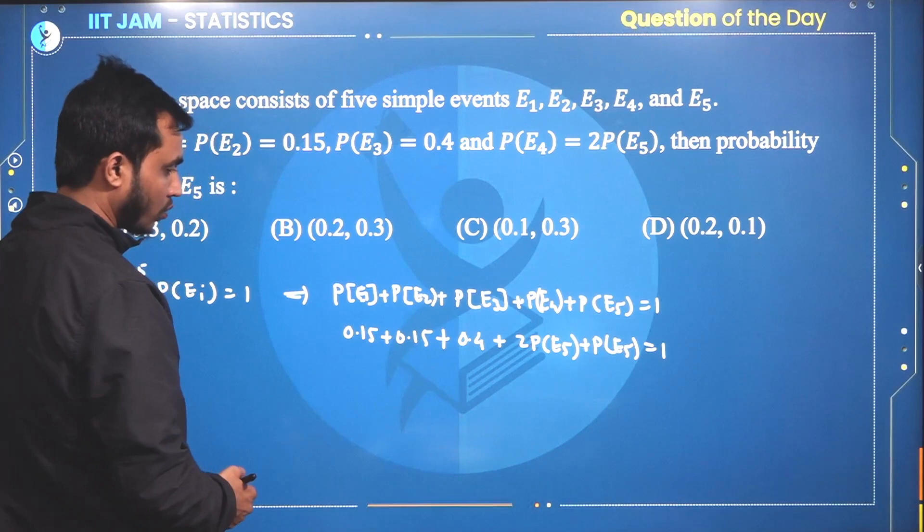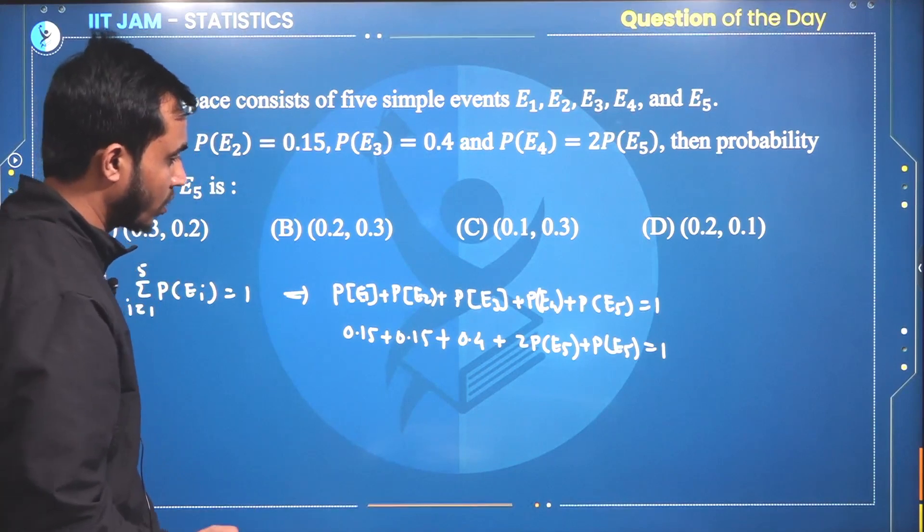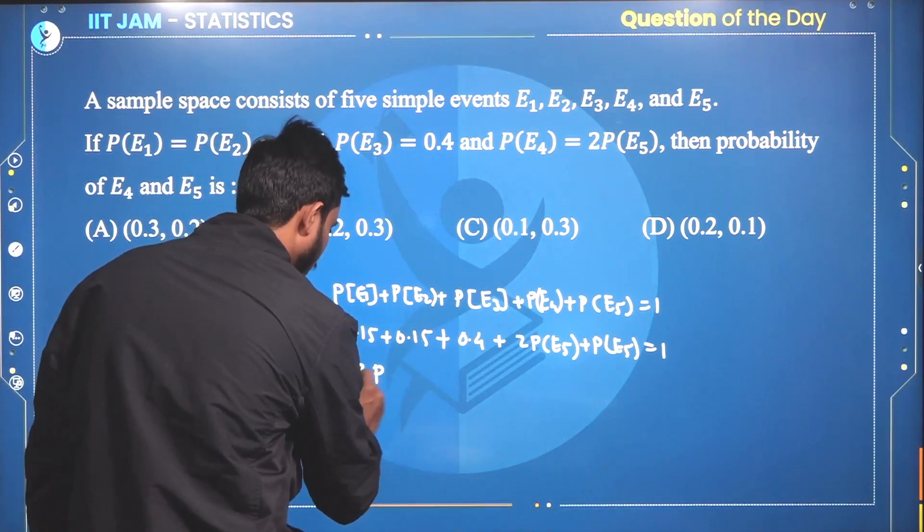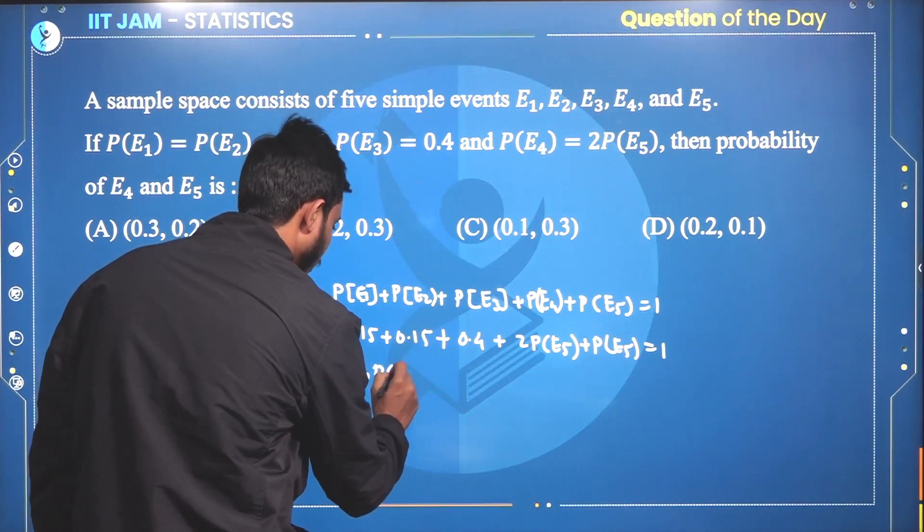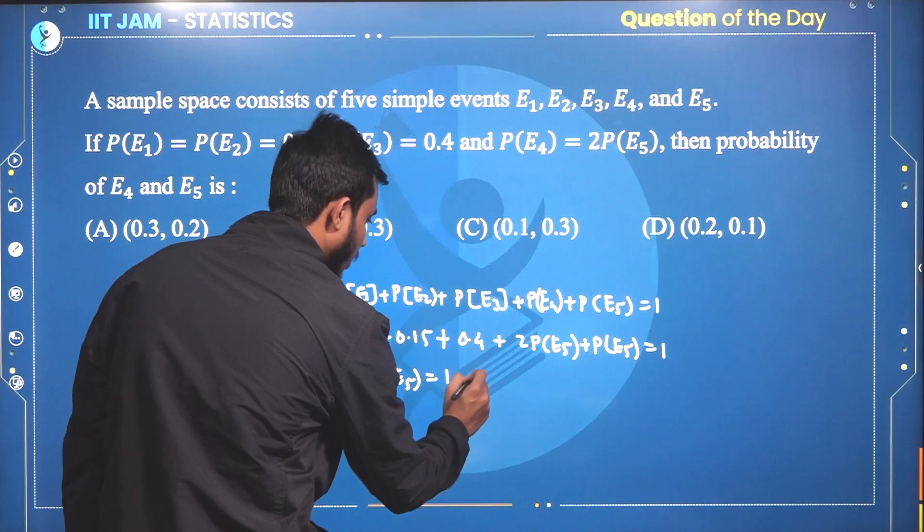Let us add these: 0.15 plus 0.15 is 0.30, and 0.30 plus 0.40 is 0.70. So, three times the probability of E5 equals 1 minus 0.7.